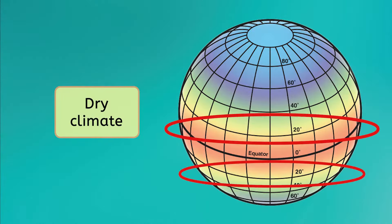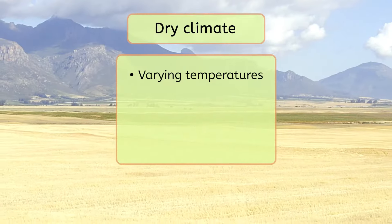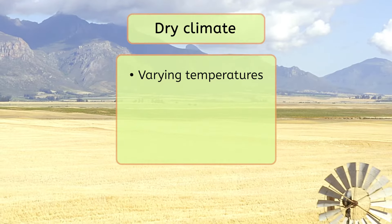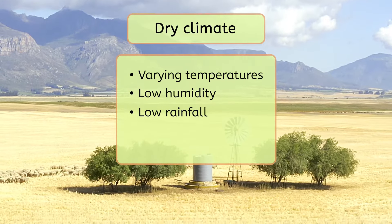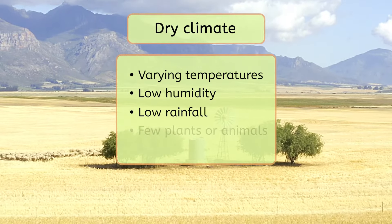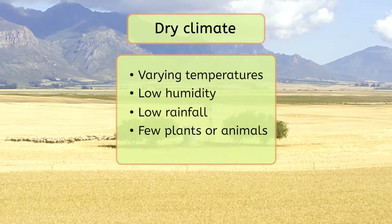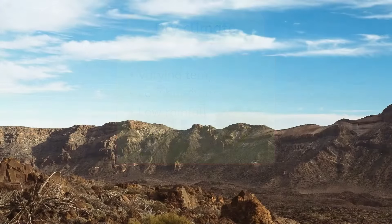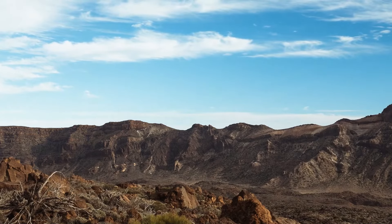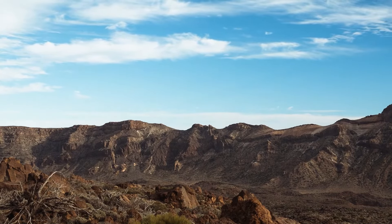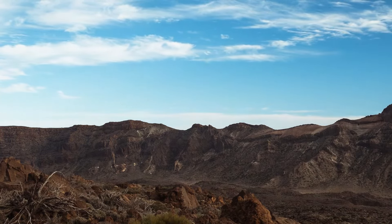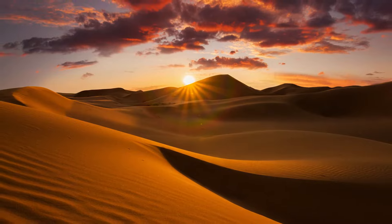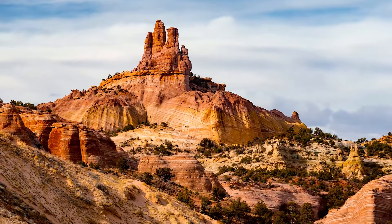Just past the equator, in both directions, there are narrow bands of dry climate. These areas can have temperatures that vary a lot, but they all have low humidity. They also receive very little rainfall throughout the year. Since there is so little water, that means there also tends to be few plants or animals. At their most extreme, in places like deserts, dry climates aren't very hospitable to people either. So if you're thinking about living here, be sure to pack some sunscreen. The Sahara Desert and the southwestern US are both found in dry climates.